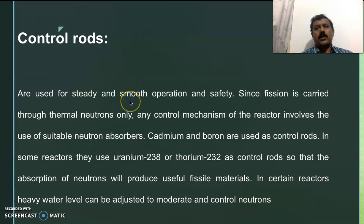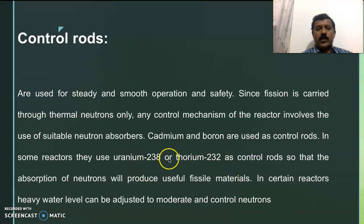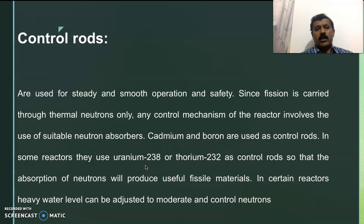To absorb neutrons, control rods are inserted into the core. These control rods have a high absorption coefficient — they absorb neutrons, so the number of neutrons reduces from one generation to the next, and after a few stages the reactor shuts down. Cadmium and boron, since they have very good absorption power for thermal neutrons, are used as control rods. In some reactors, uranium-238 and thorium-232 are used as control rods. The main advantage is that these are very good fertile materials — once they absorb neutrons, they become fissile materials, so these control rods can later be used as fuel. That is an advantage of using uranium-238 or thorium-232 as control rods.